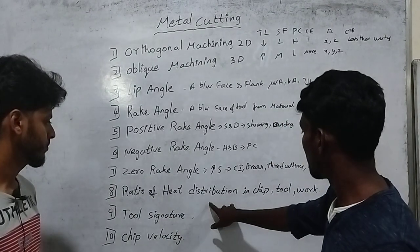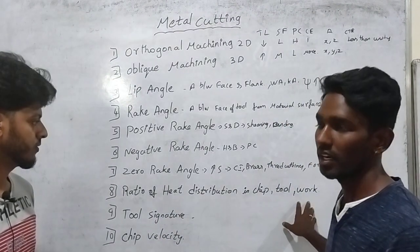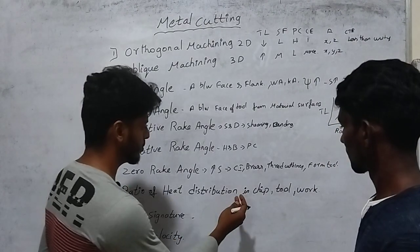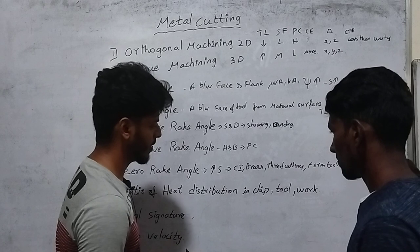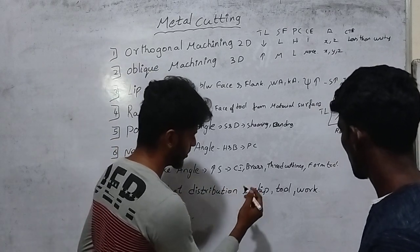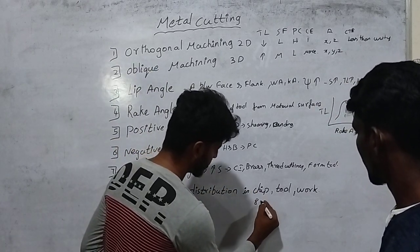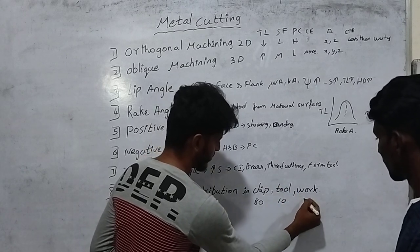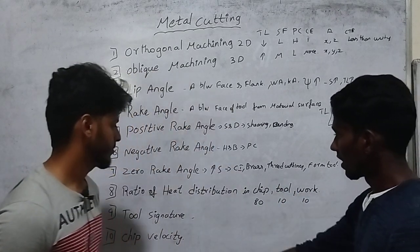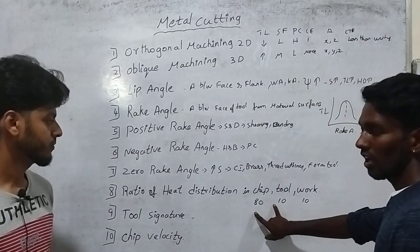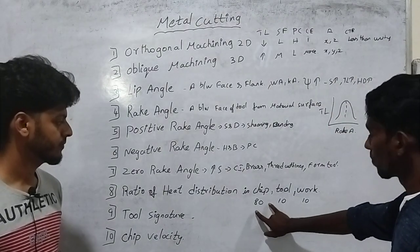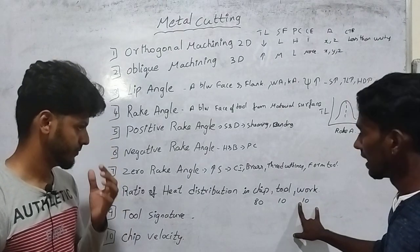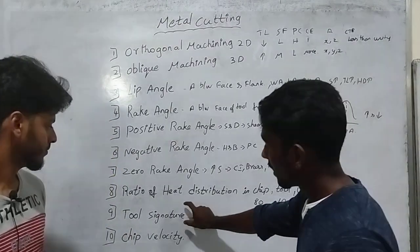Now let's define the ratio of heat distribution. In the cutting process, heat is distributed among the chip, tool, and workpiece. We have 80% of heat produced going to the chip and 2% to the work.